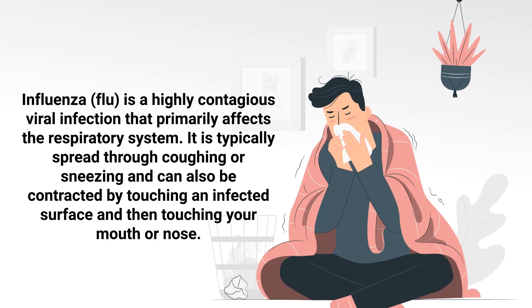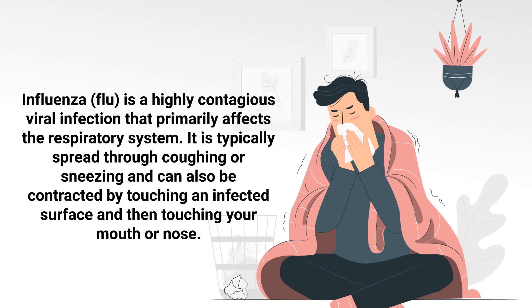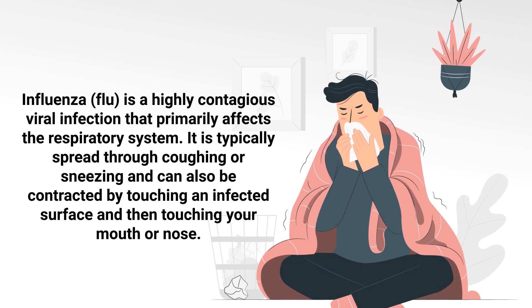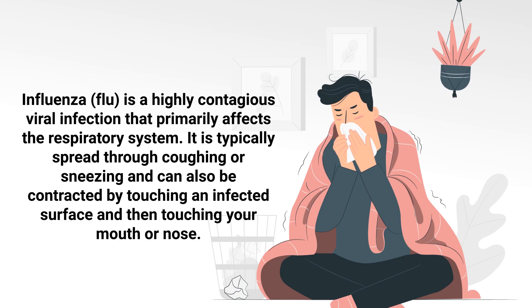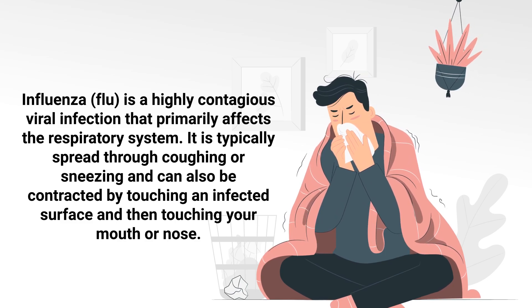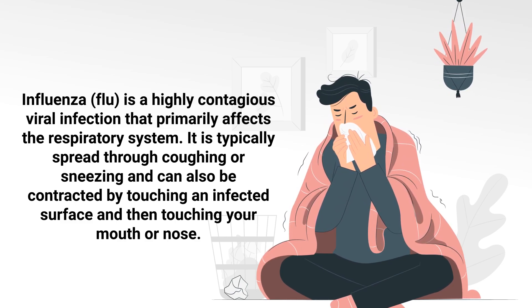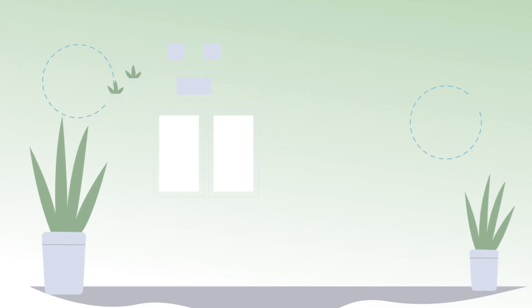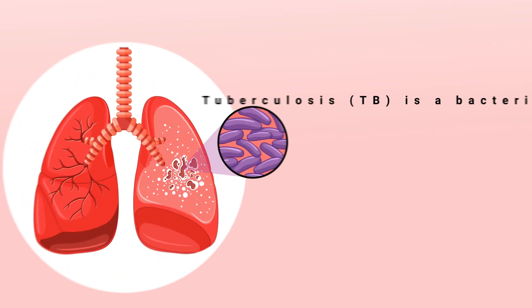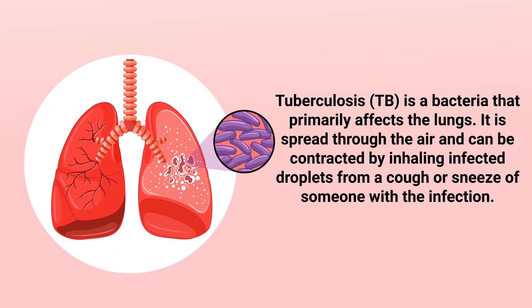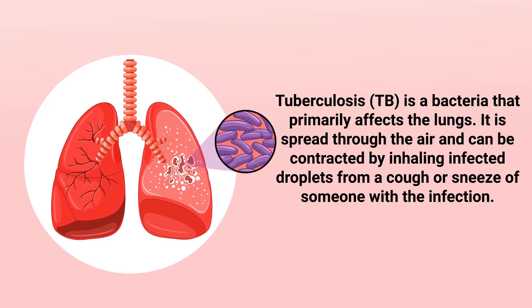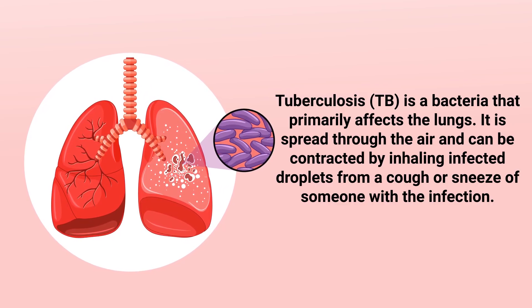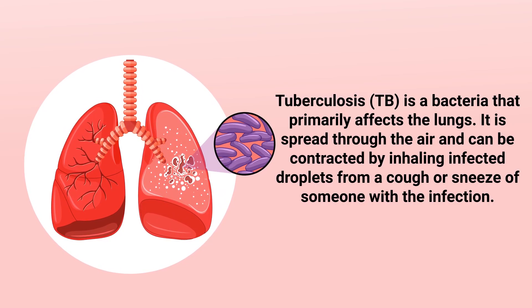Influenza is typically spread through coughing or sneezing, and can also be contracted by touching an infected surface and then touching your mouth or nose. Next up is tuberculosis, which is a bacterial infection that primarily affects the lungs. It is spread through the air and can be contracted by inhaling infected droplets from the cough or sneeze of someone with the infection.